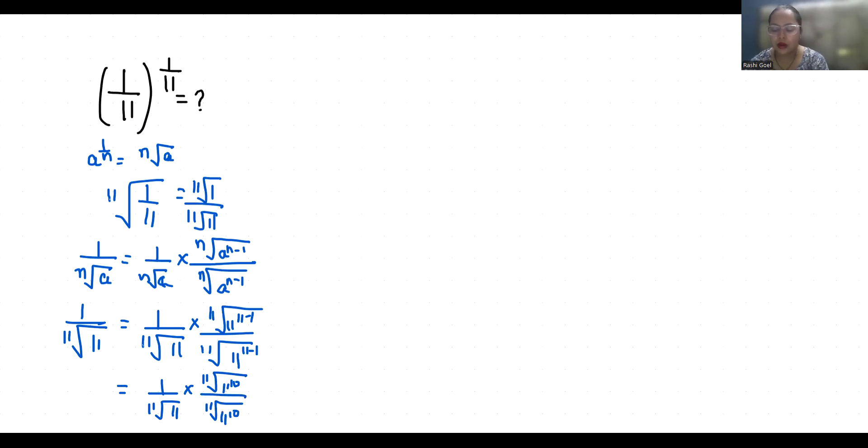So the numerator becomes 11th root of 11^10, and this becomes 11th root of 11 times 11^10. So 11th root of 11^10 by 11th root, this becomes 11^(1+10).